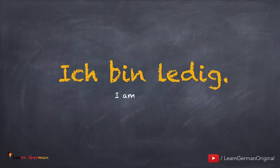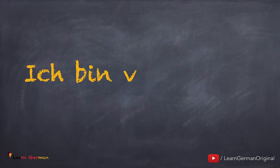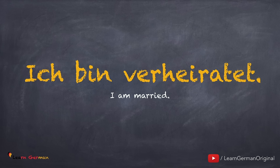If you are unmarried, you say Ich bin ledig. Noch einmal. Ich bin ledig. And if you are married: Ich bin verheiratet. Noch einmal. Ich bin verheiratet. Ver-hei-ra-tet. Verheiratet.